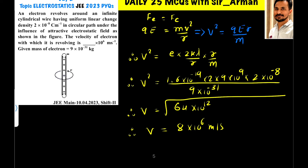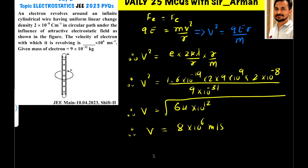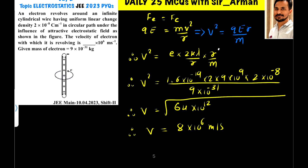We want v, so v² = qEr/m. The charge is the charge of the electron. The electric field due to an infinite long wire is E = 2kλ/r. Substituting this in, we get r/r, which cancels. The value of the charge of the electron is 1.6×10⁻¹⁹ C.